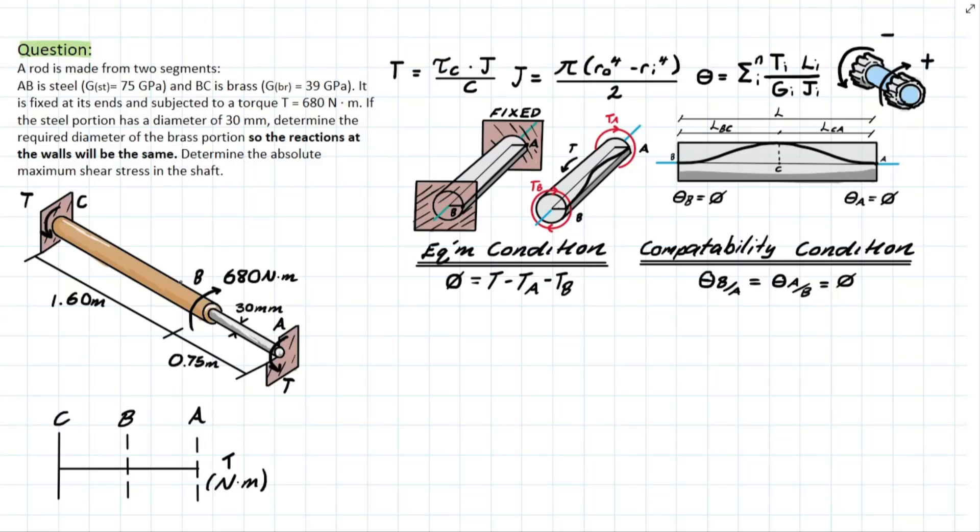And it's fixated at both ends and subject to a torque of 680 Nm at point B, and if we know that the diameter of the steel shaft is 30 mm and wants us to determine the required diameter of the brass portion so that the reactions at both of these ends are going to be exactly the same.